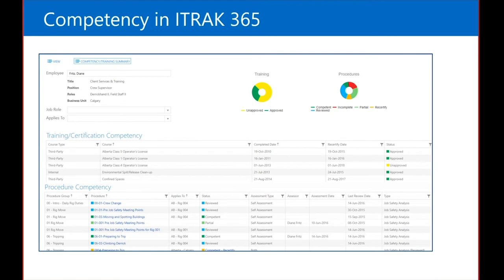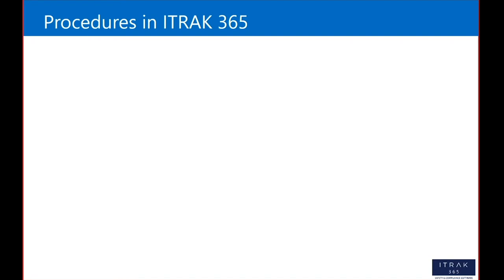Training covers courses or other requirements employees would take, either externally or internally, such as WHMIS or first aid. Procedures allow you to define a series of steps and tasks, their related hazards and concerns, their risks, and their recommended controls to mitigate those risks. We can then measure an employee's level of competency for the procedure.